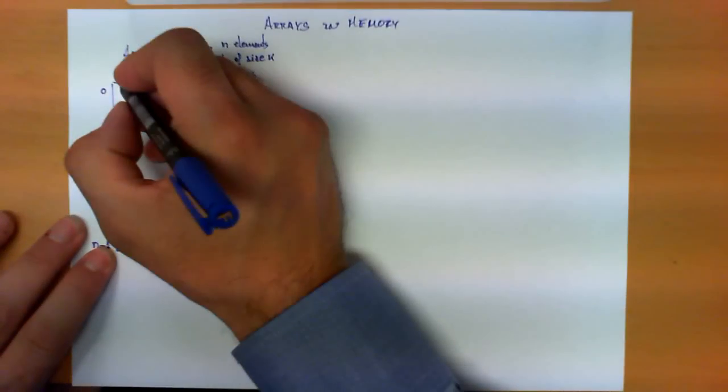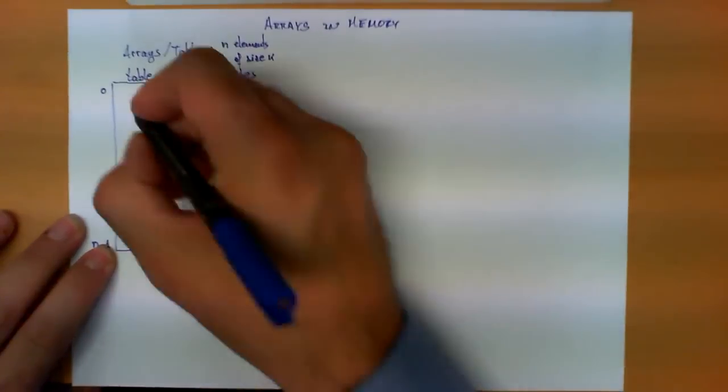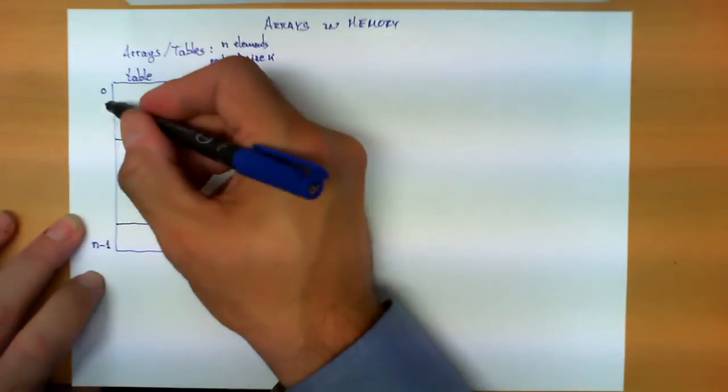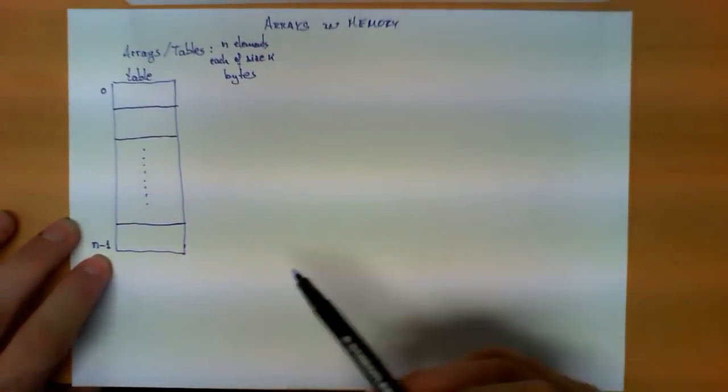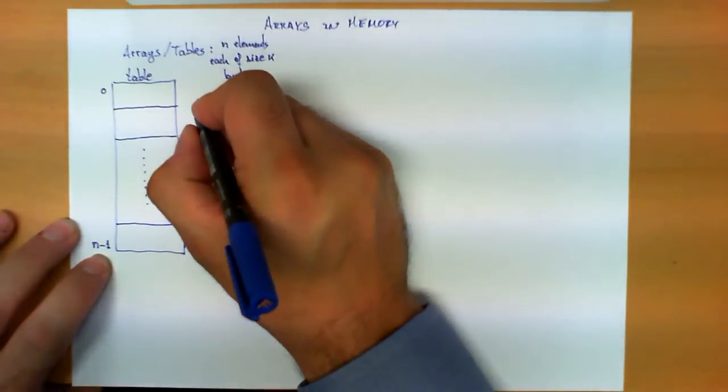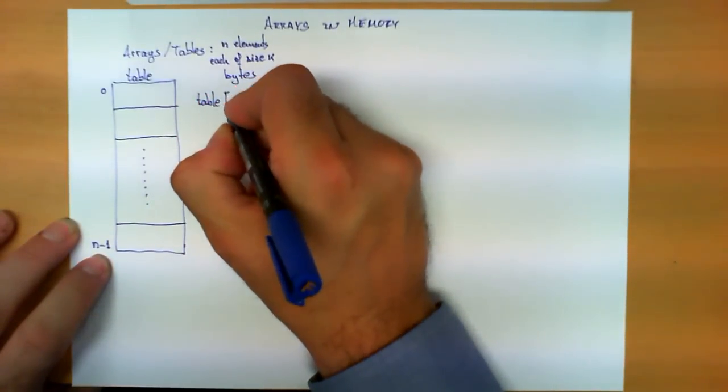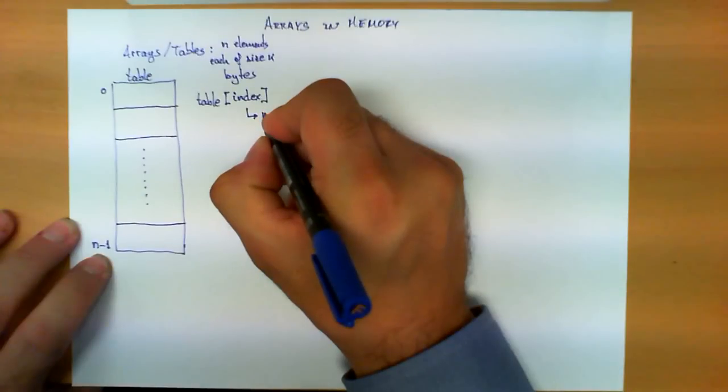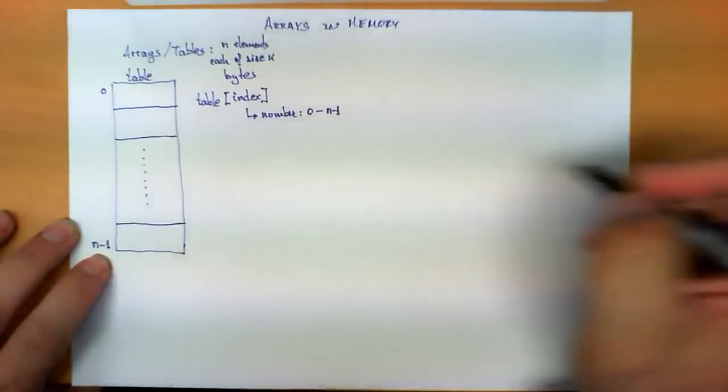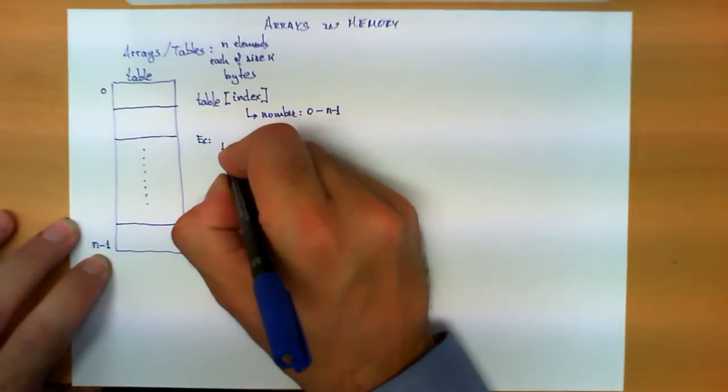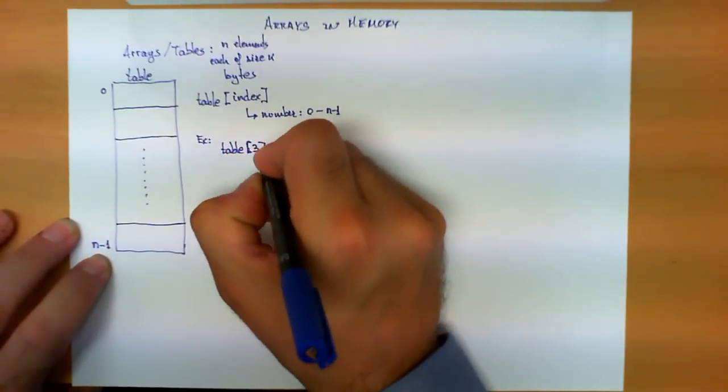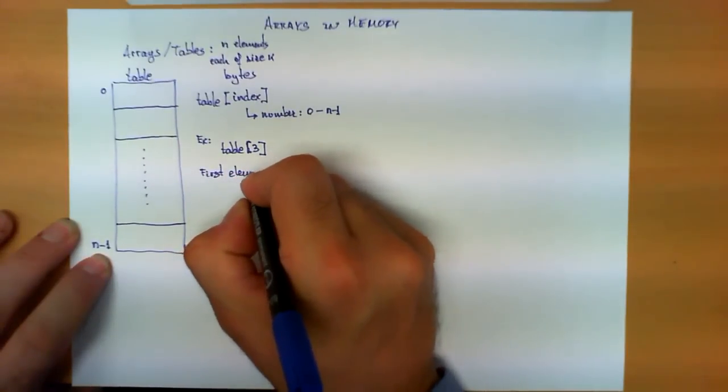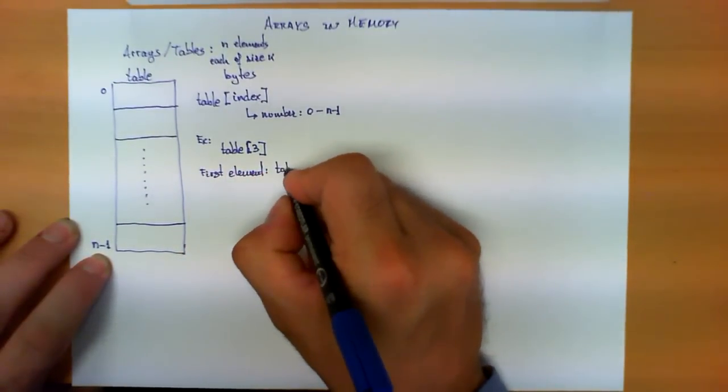The interesting thing this table has, let's suppose this table is called table, the first element is here, the second element is here, and so on until the last element which has the number n-1. The special property about this table is that to refer to these elements we're going to use the following notation: we put the name of the table, and then in between brackets we'll put what we call the index which is a number between 0 and n-1. For example, table of 3 refers to the fourth element, because the first element typically in most programming languages is table of 0.